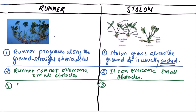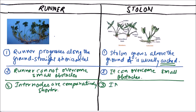If we compare the internodes, these are comparatively shorter in a runner, while internodes are usually longer in a stolon.